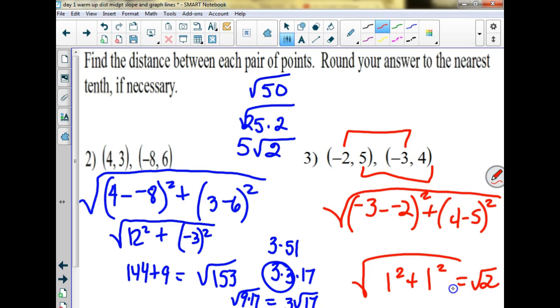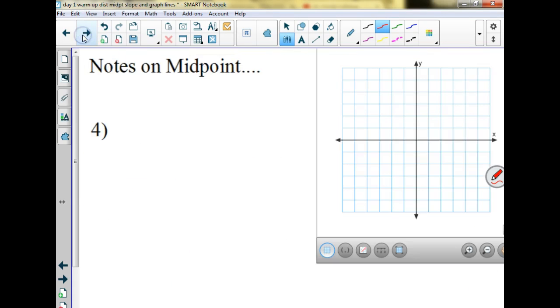You've got to square them first. 1 squared is 1 plus 1 squared is 1. The square root of 2. We good? This should have turned out the same, right? Because it was negative 1 squared is 1. This is negative 1 squared is 1. Any questions? Remind me tomorrow if you need me to do more.